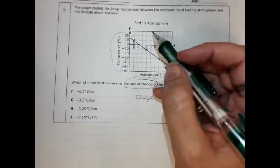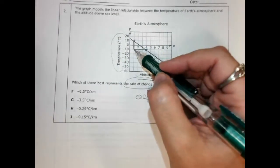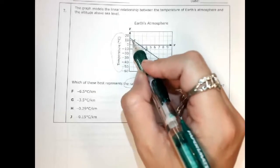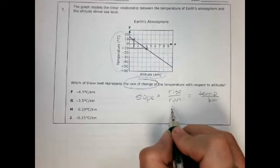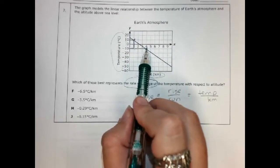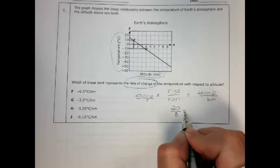Now you just have to be careful because it's not 2 going down, it's actually how far going down. It's actually 20 going down. And the run is 1, 2, 3. So, it's really 20 over 3.